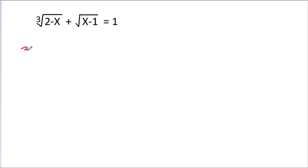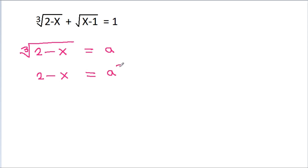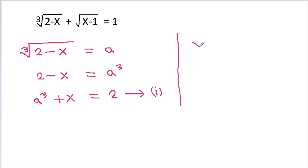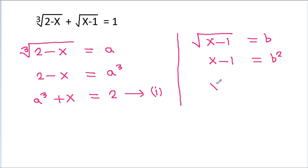So if we take cube root of 2 minus x equal to a, then 2 minus x will be equal to a cubed, and a cubed plus x will be equal to 2. Suppose this is equation 1. And if we take square root of x minus 1 equal to b, then x minus 1 will be equal to b squared, and x will be equal to b squared plus 1. Suppose this is equation 2.